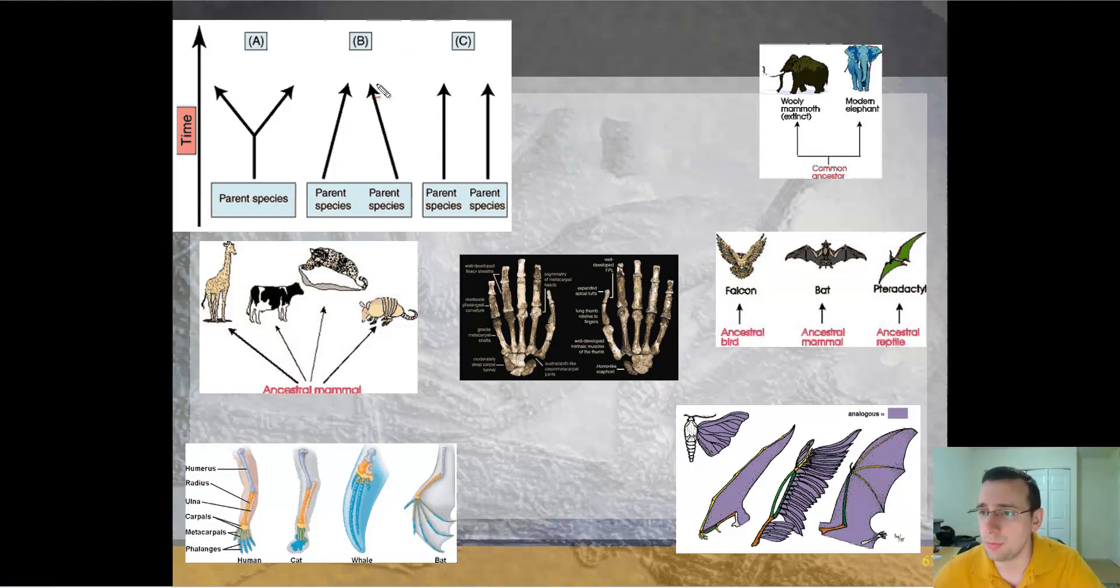So convergent evolution will be what you see here in the diagram. Over time, two species will come from different parent species and end up in the same final look because of common pressures.